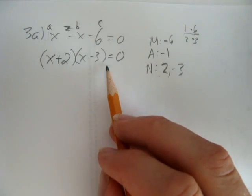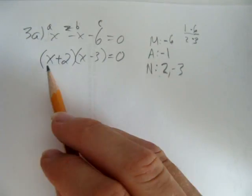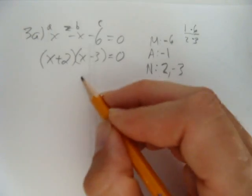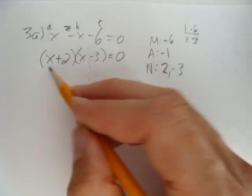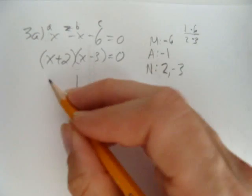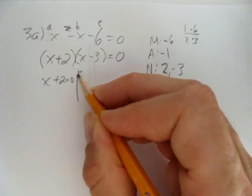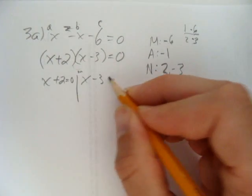I know that these things, these two brackets, these two binomials, when multiplied will give me this. I also know now that each of these brackets is a possible solution. x plus 2 equals 0 or, I did a little or there, x minus 3 equals 0.